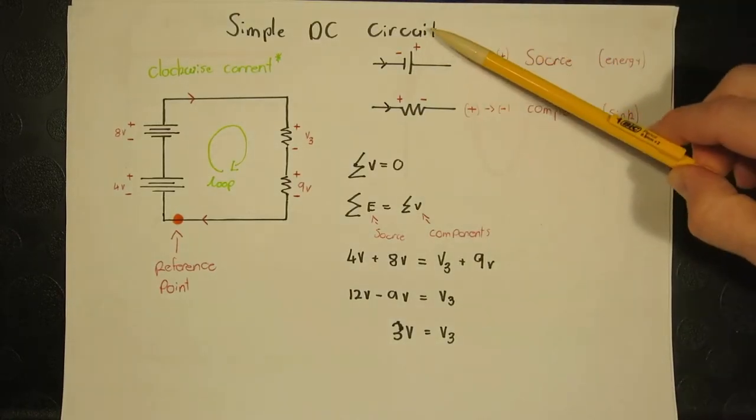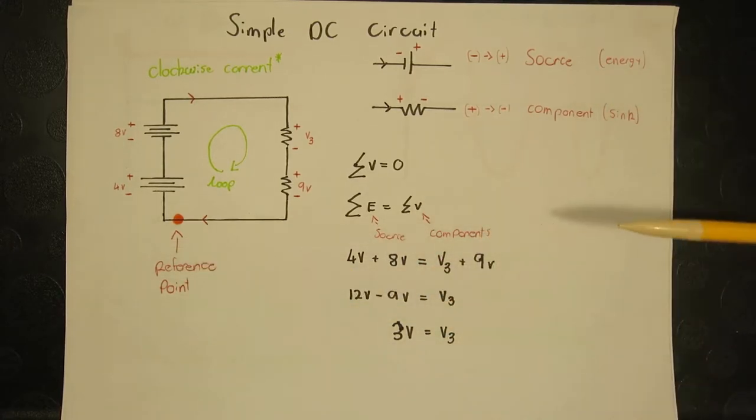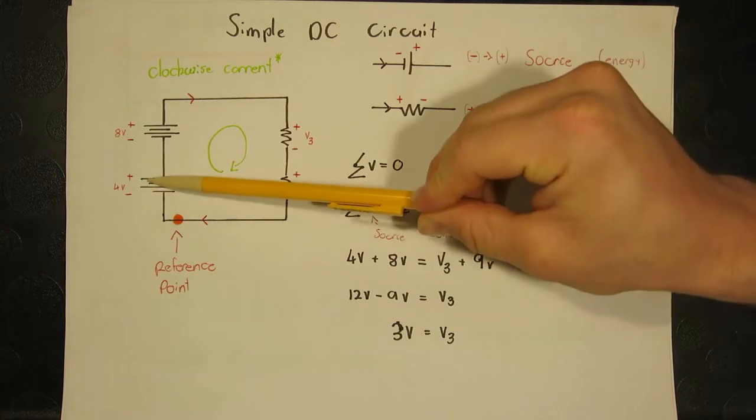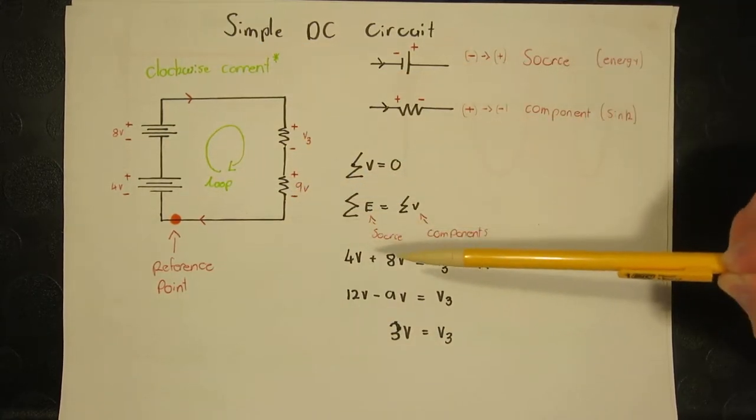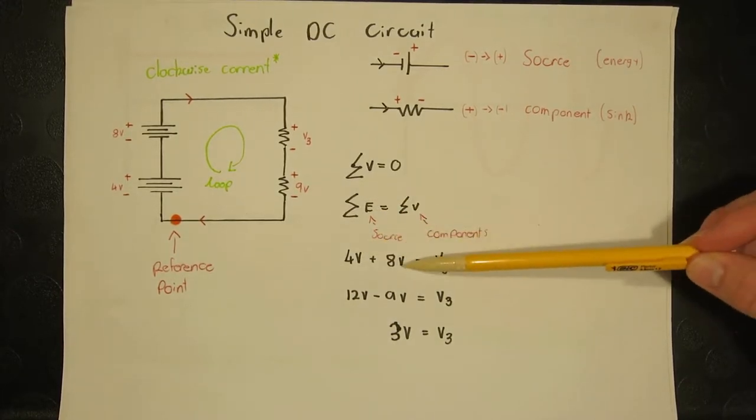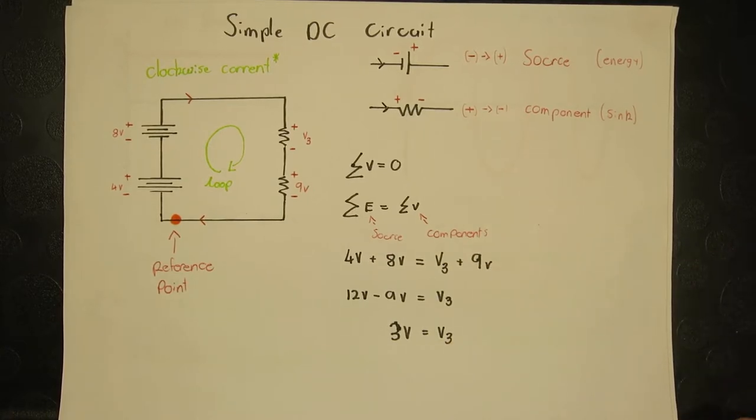As shown here in this simple DC circuit, a reference point is always a good idea to prevent confusion in calculations. Going around the loop, we have two source voltages and two components, or consumers of voltage. Doing some basic KVL calculations, we find that 4 plus 8 equals V3 plus 9 volts, with V3 equaling 3 volts total.